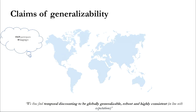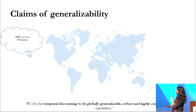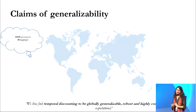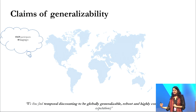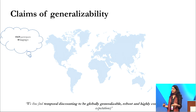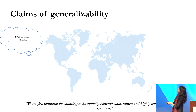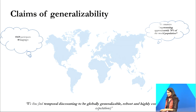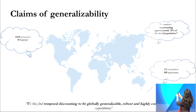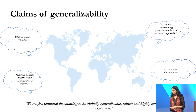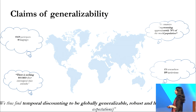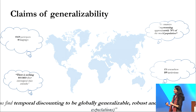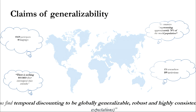Before I show you the data, I want to quickly summarize some of these claims and give you a little flavor of how far we have come with big team science studies. The study had over 13,000 participants across 40 languages, and the authors claimed it represented 76 percent of the world's population. There were 171 researchers from around 109 institutions, and the authors claim that temporal discounting is globally generalizable, robust, and highly consistent. This strong claim of generalizability is what I want to unpack.